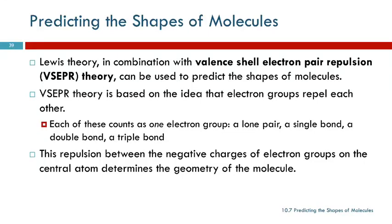We mentioned that the shapes of molecules are important in terms of chemical and physical characteristics of compounds. Lewis theory is the basis for another theory called valence-shell-electron-pair repulsion theory. The first letters of those words give us VSEPR, even though that switches the order around. It's too long to say the full name all the time, so we say VSEPR theory.